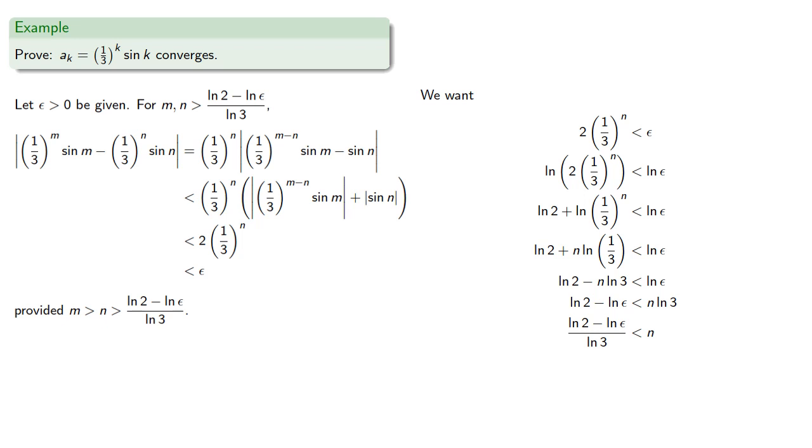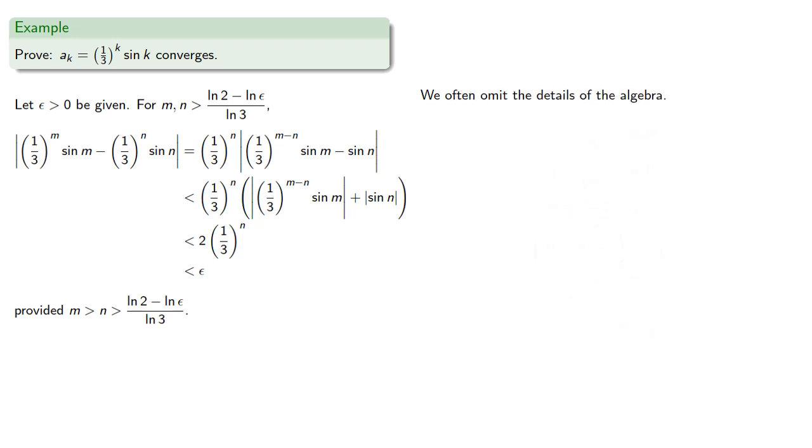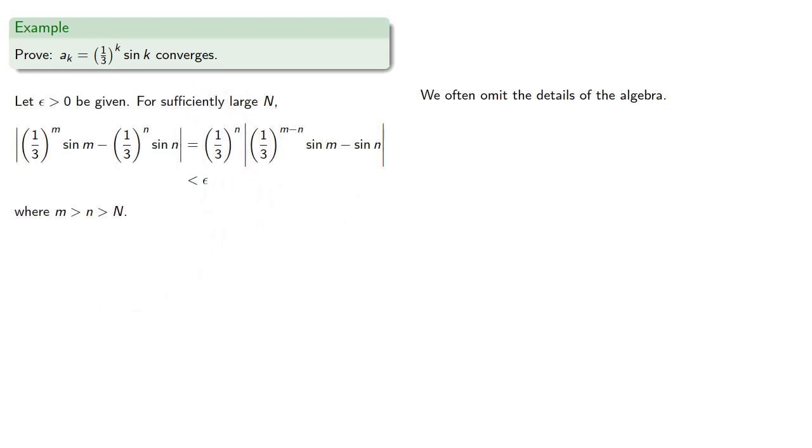One final note, the algebra here is not particularly difficult, so we often omit the details of the algebra, and we replace this explicit computation of our lower bound with a phrase like, for sufficiently large n.